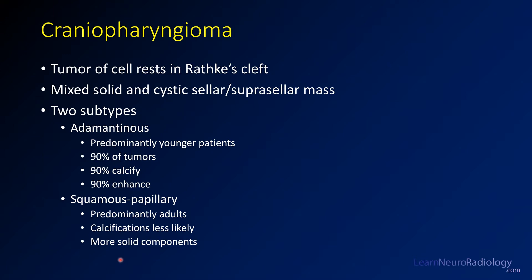This is a craniopharyngioma. These are tumors of cells that occur in Rathke's cleft. They are mixed solid and cystic neoplasms, and the most common subtypes are the adamantinomatous and the squamous papillary ones. The adamantinomatous type is predominantly in younger patients and features calcification and enhancement, while the squamous papillary type occurs in adults — this case was most likely a squamous papillary type.